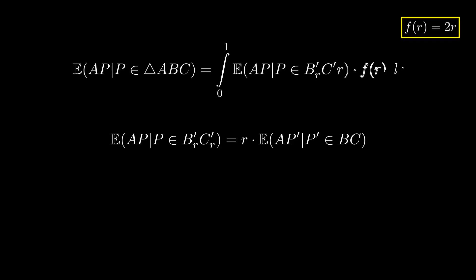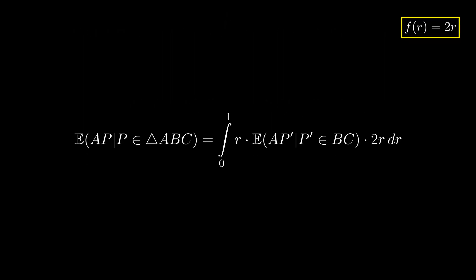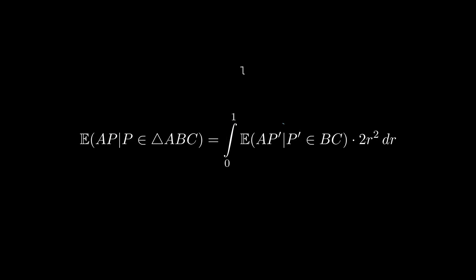Putting this all together, the expected length of the segment AP given P lies on the triangle ABC equals R times the expected length of AP' given P' lies in BC times the density function of P lying on segment B'C' over all possible values of R. We know that the density function is 2R and more importantly we can clearly see that the expected value of the expression inside the integral is independent of R. This helps us conveniently pull this expression out of the integral. So at the end of all this, we now know that the expected length of the segment AP given P lies inside triangle ABC is 2/3 the expected length of segment AP' given P' lies on BC.